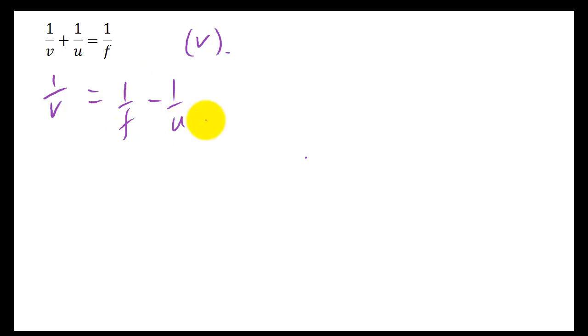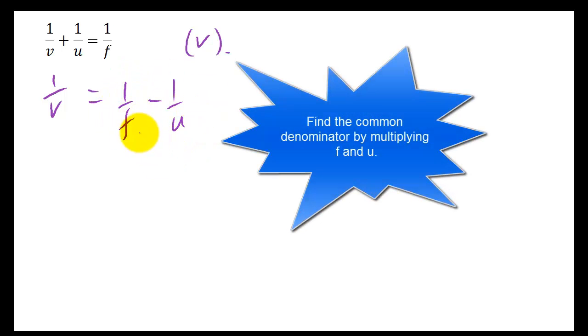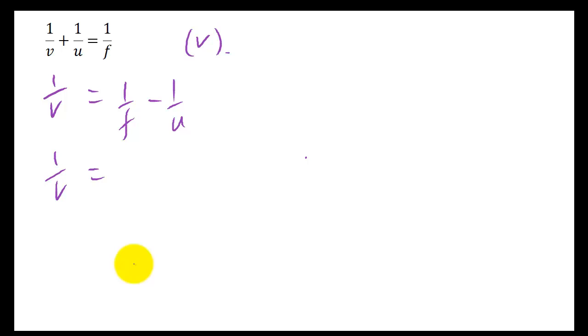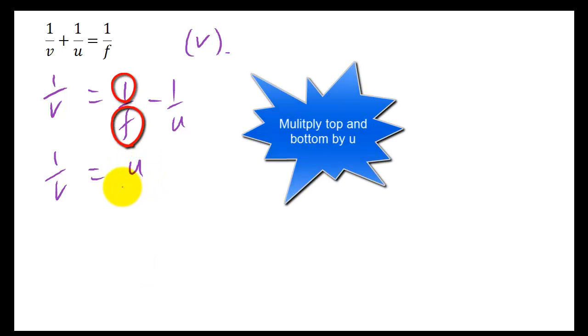And by doing that, you haven't changed the fractions, because you're timesing top and bottom by the same thing - essentially they can cancel out. So 1 over F times by U on the top, times by U on the bottom, leaves you U over FU.